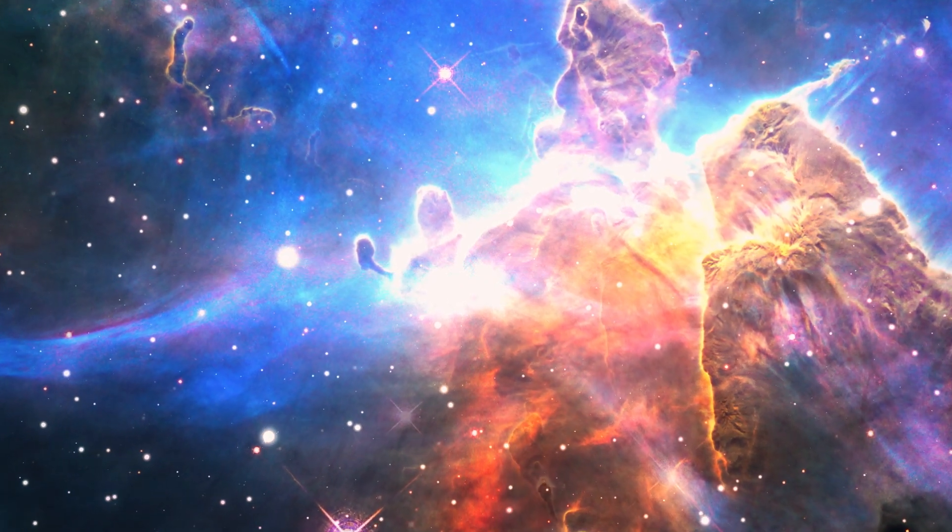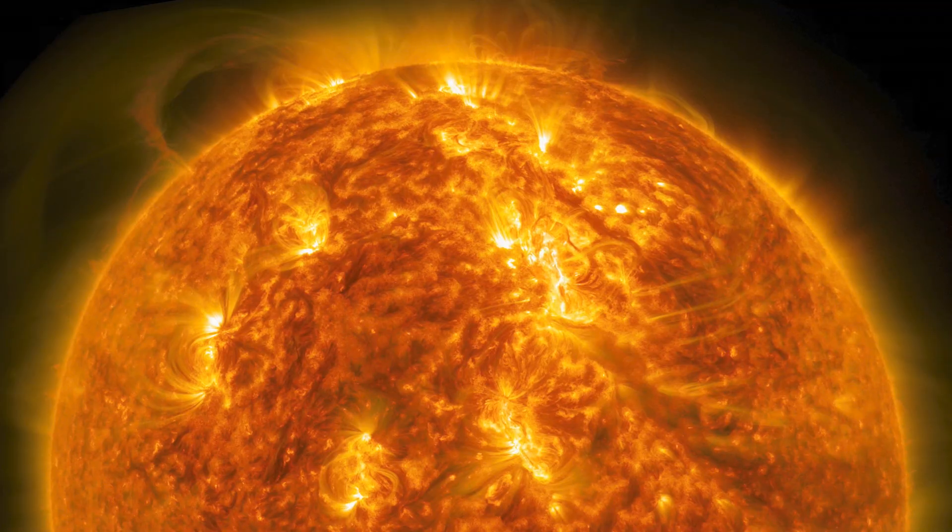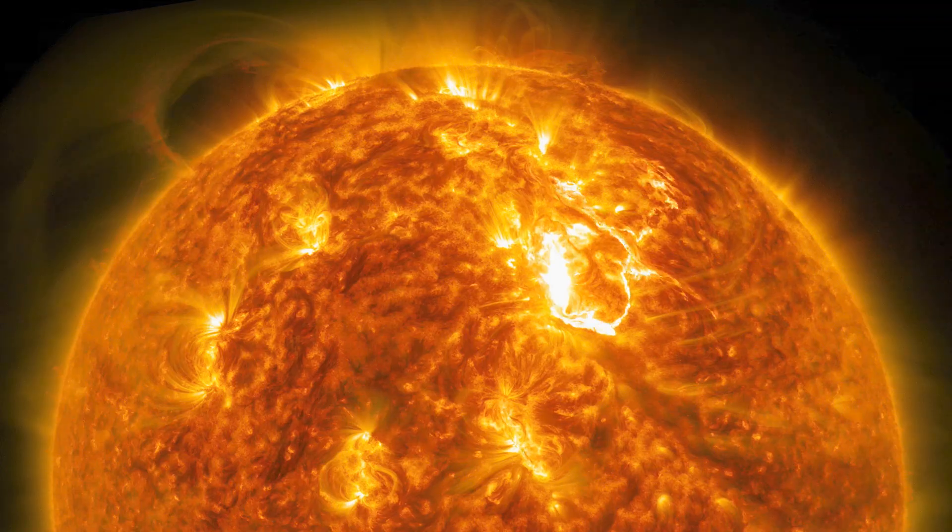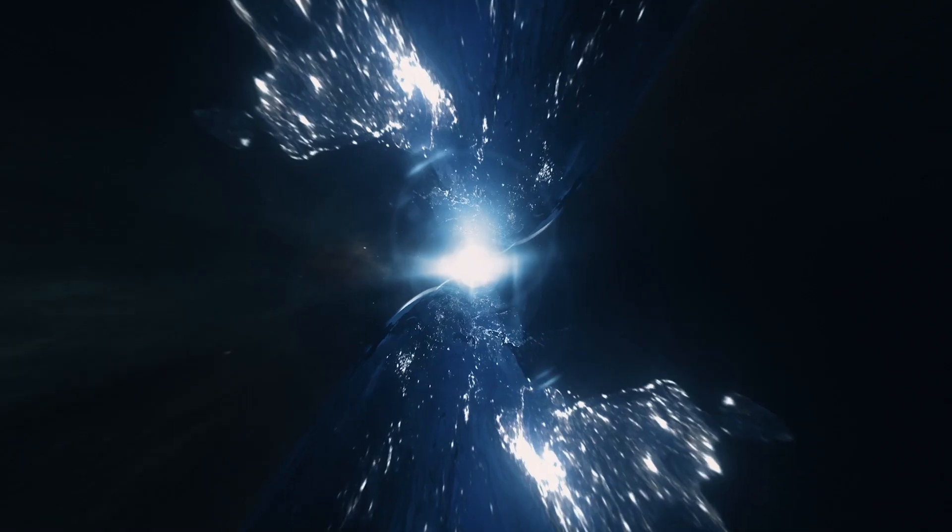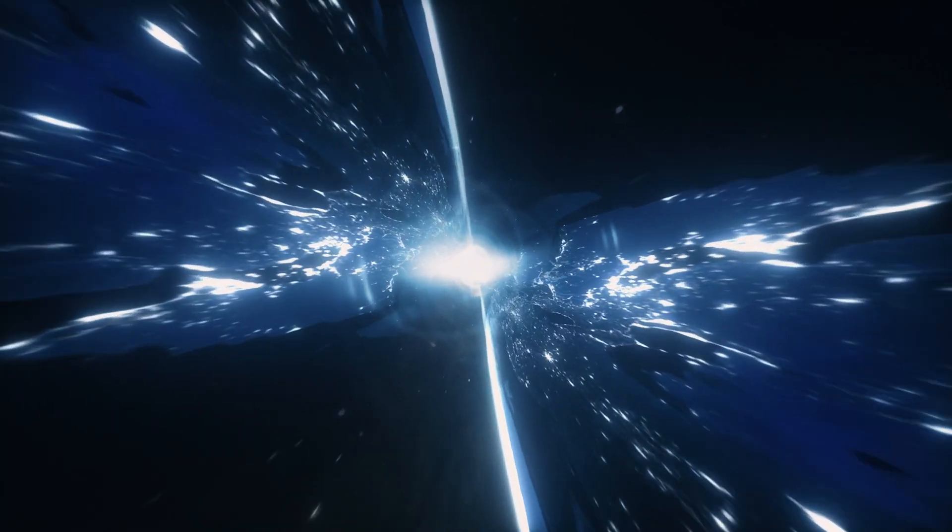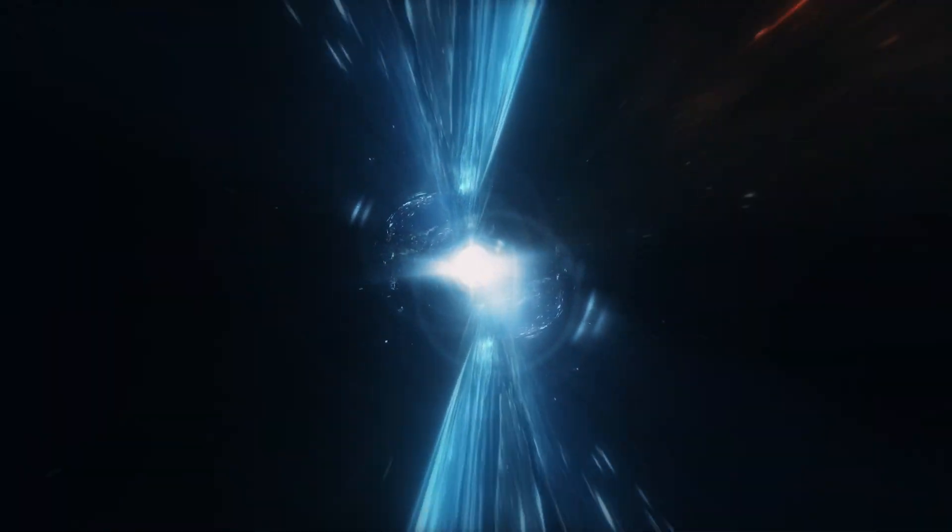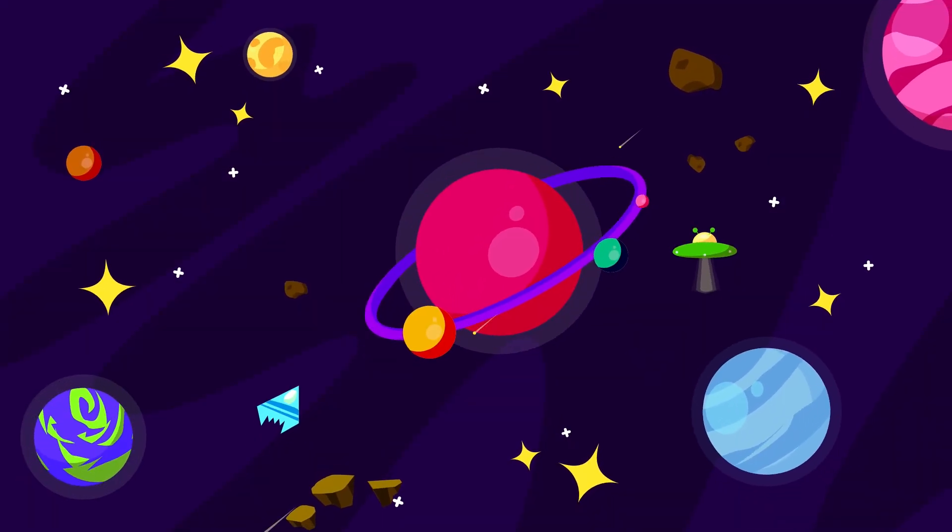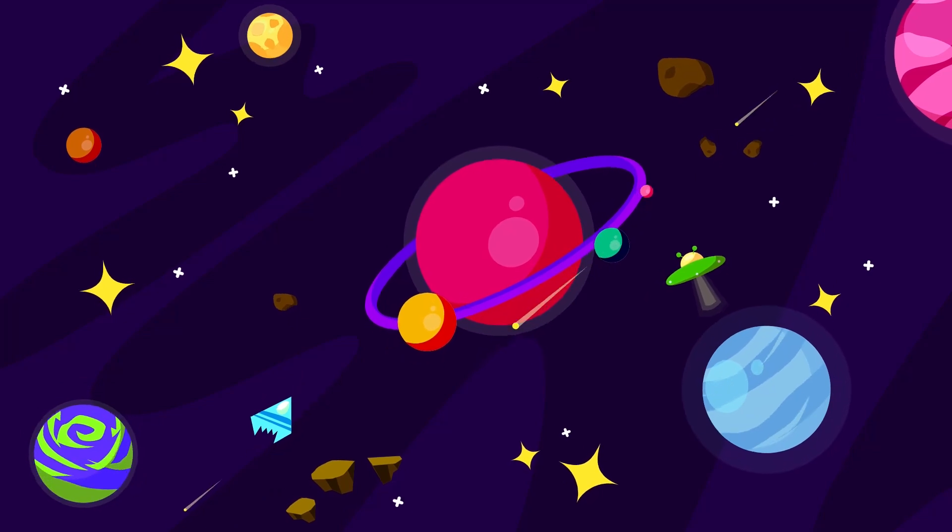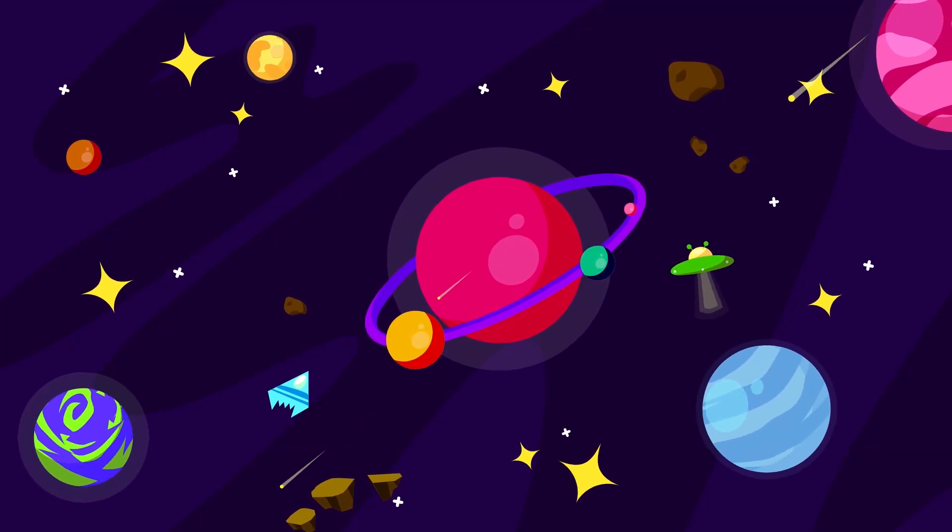Space is unimaginably vast. Did you know that light from the sun takes over eight minutes to reach Earth? Even though light travels at an astonishing speed of about 299,792 kilometers per second, it still takes time to traverse the immense distance between us and our closest star.